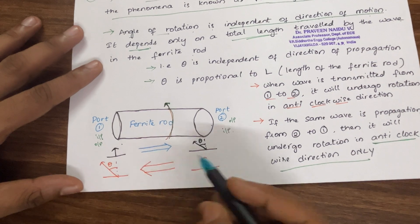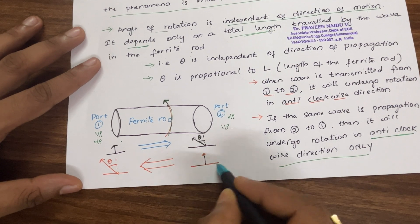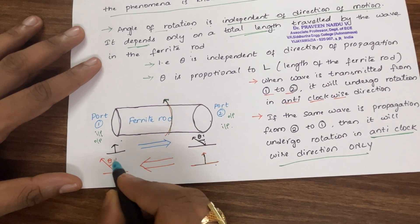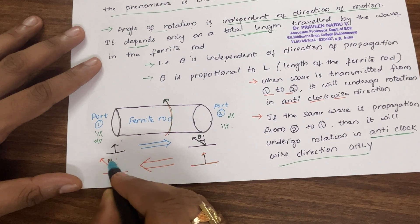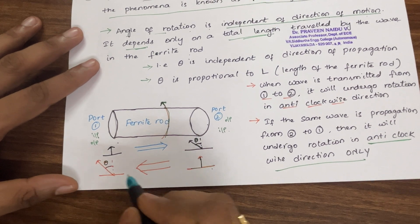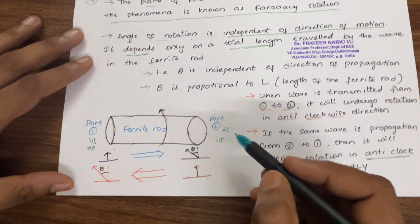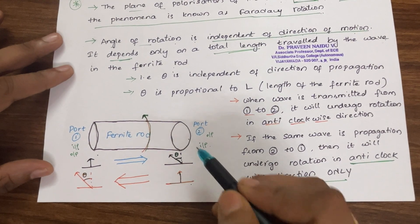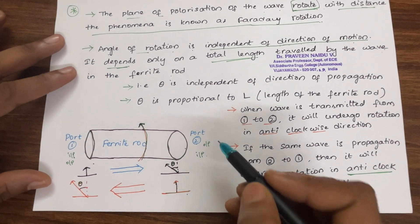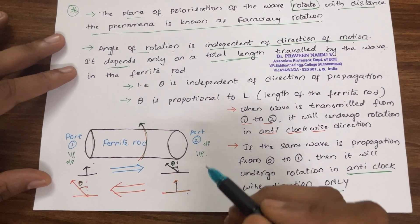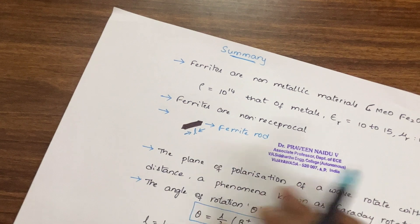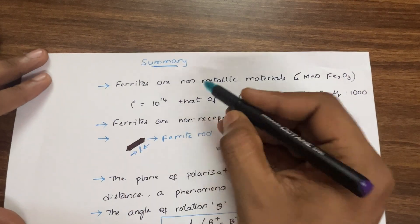Similarly, if input is given at port two and output is measured at port one — moving from right to left — the rotation is also anti-clockwise by theta. This is a very important property. The Faraday rotation phenomenon and the anti-clockwise rotation property of the ferrite rod are applied in three major ferrite-based microwave components: gyrators, isolators, and circulators.